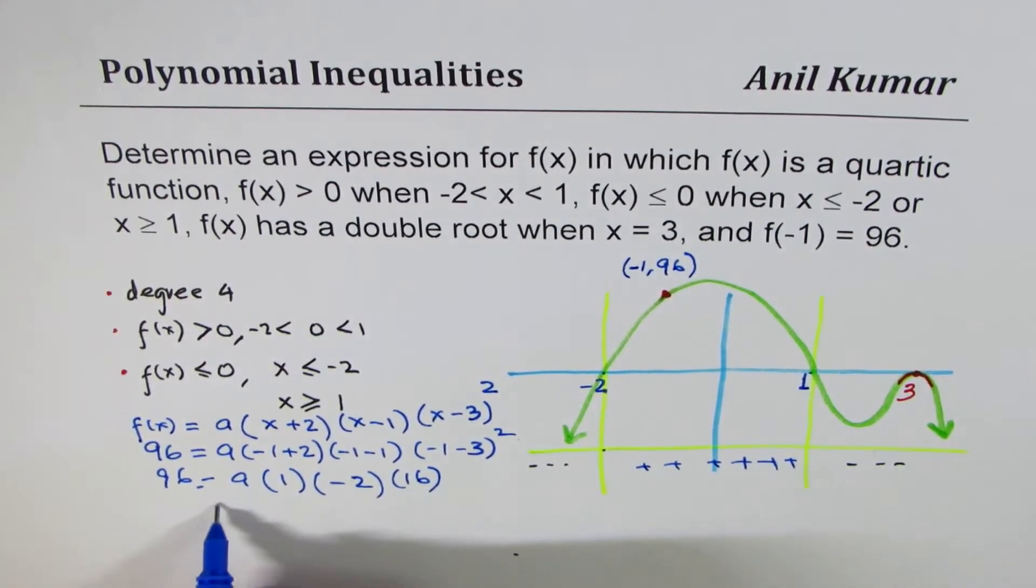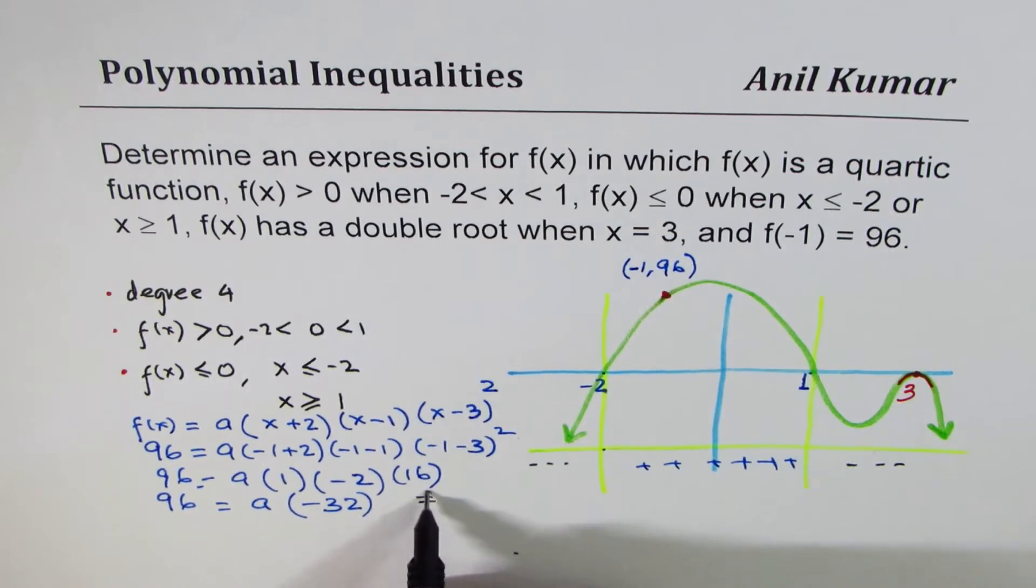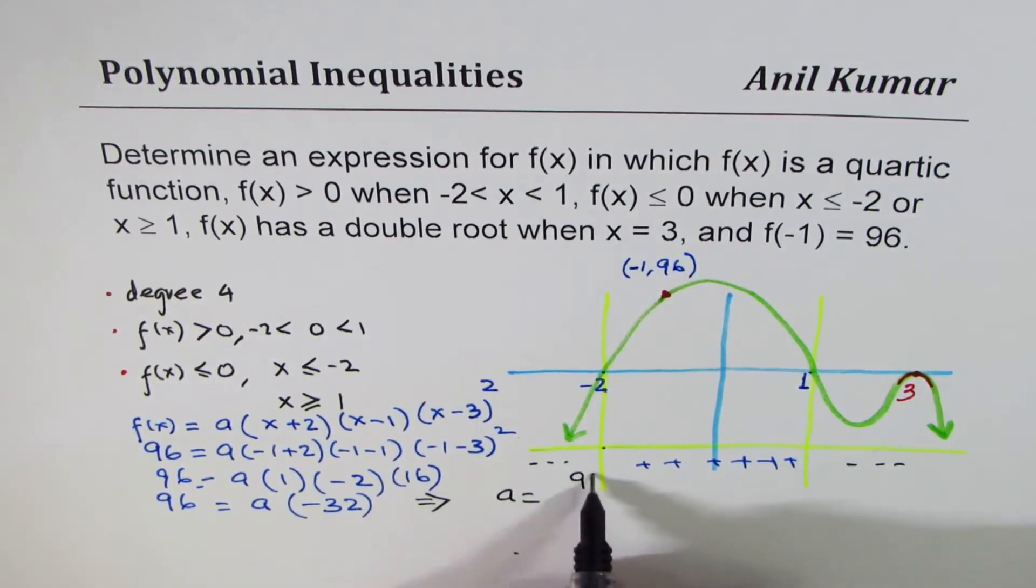So, that gives us 96 and that is minus 32. Is it okay? Minus 32. So, from here, we can calculate the value of a. a is equals to 96 divided by minus 32. That is indeed minus 3.